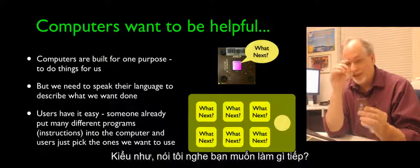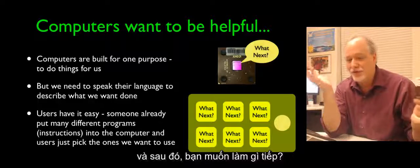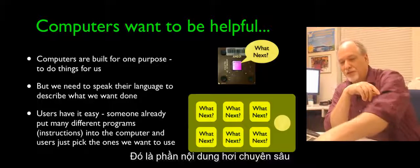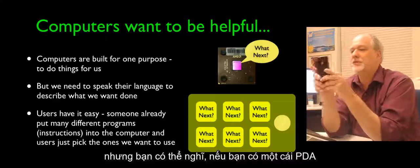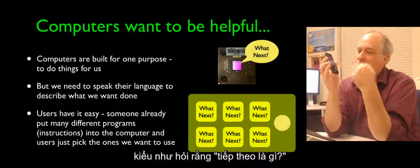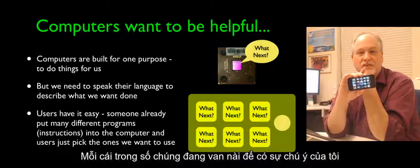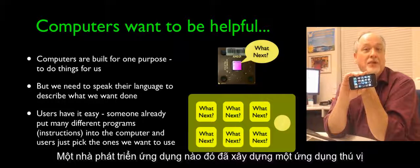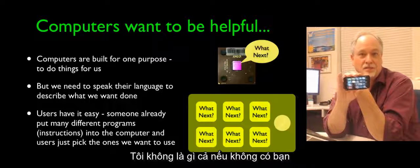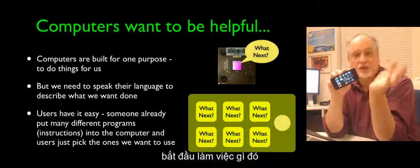This thing is wired to be curious about what's next — tell me what you want to do next — and it does that a billion or so times a second. You can also think of it like a PDA where all the buttons are some kind of 'what's next.' Each button is an application developer saying please use me, please click me. We humans are the things that cause computers to start doing something.